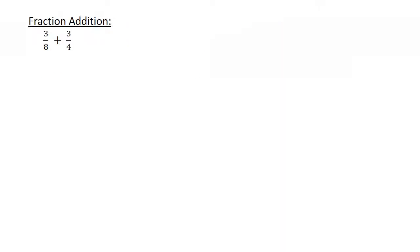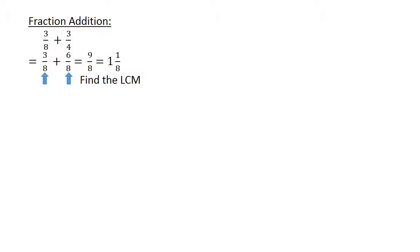Fraction addition. Find the lowest common multiple. 3 over 8 plus 3 over 4. Find the lowest common multiple: 3 over 8 plus 6 over 8 equals 9 over 8, which equals 1 and 1 over 8.